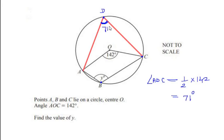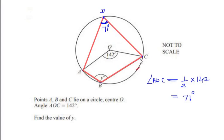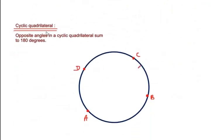The question asks us to find the angle at point B, which is y degrees. To find angle y, we can use the cyclic quadrilateral theorem, because A, B, C, D forms a cyclic quadrilateral with all vertices on the circle. The cyclic quadrilateral theorem involves a circle with four points on it.